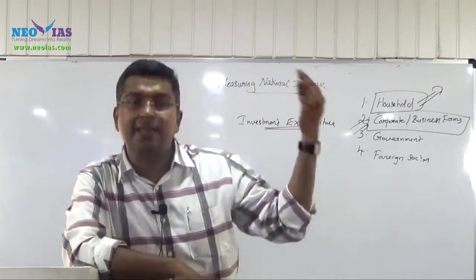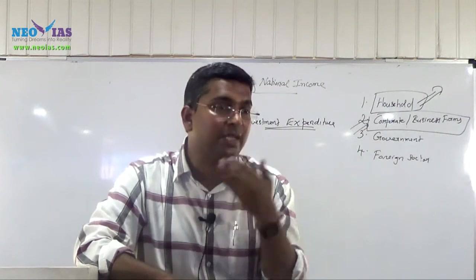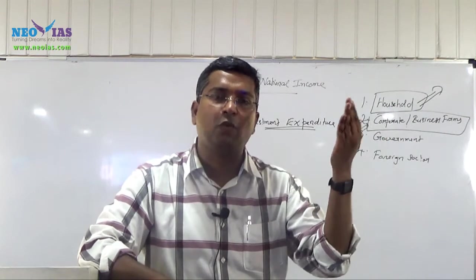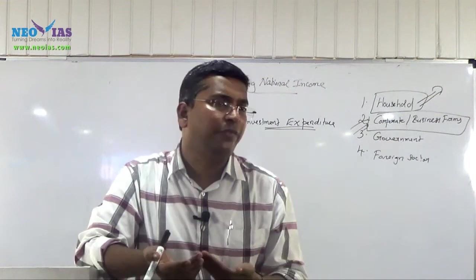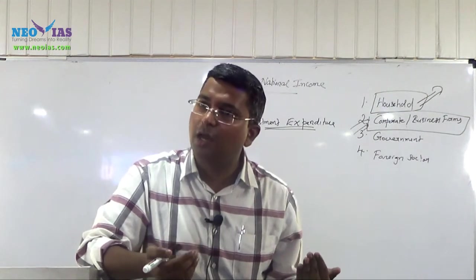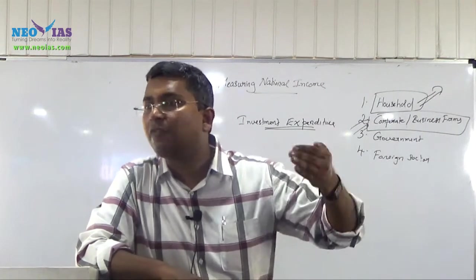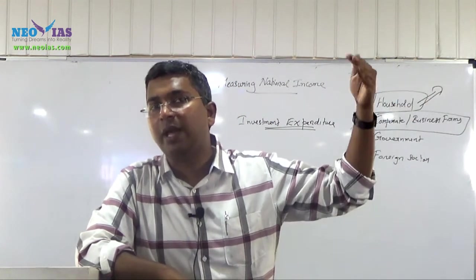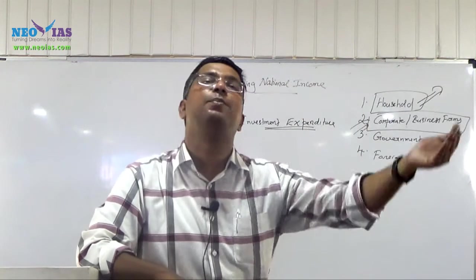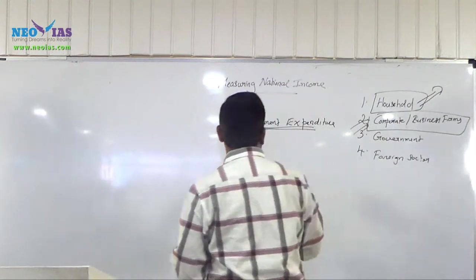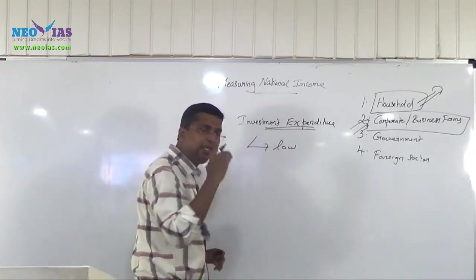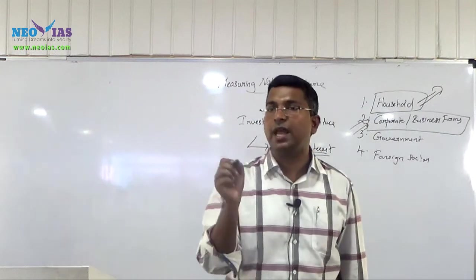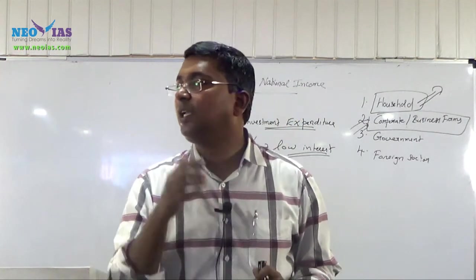To increase national income, we have to increase investment expenditure. To support that, business firms require funds. Most of their investment expenditure comes from borrowed funds — they borrow from banks. A lower interest rate regime helps them go for more investment expenditure. If the business firm can get a bank loan at a lower interest rate, that results in more investment expenditure.